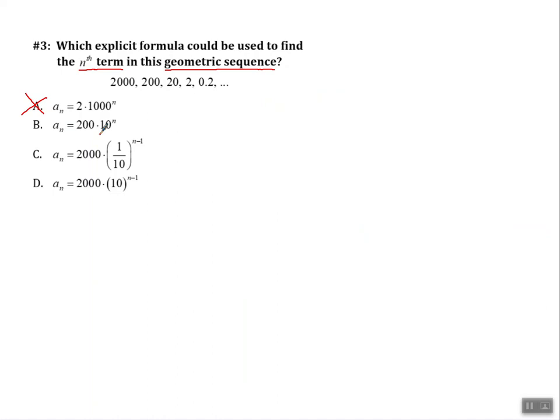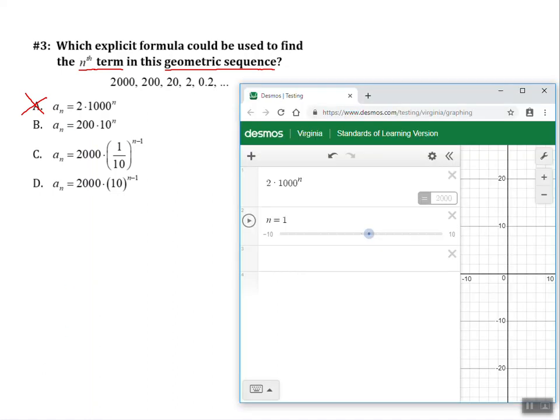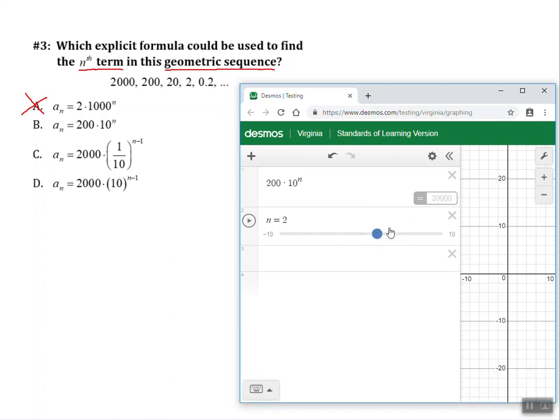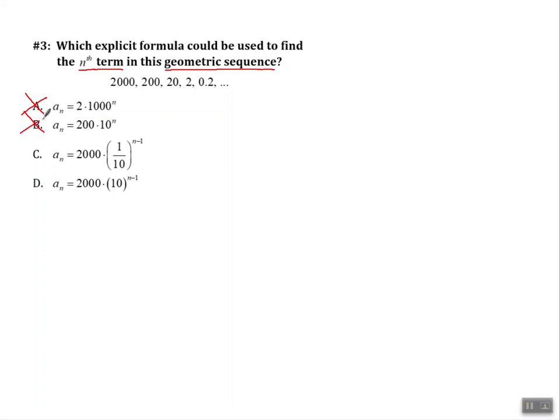Let's try answer choice B. Pull up Desmos, and I'm going to change this 2 to a 200, and it's times 10 to the n power. And let's see what I've got. Oh, I got the first term is correct again, but when I slide over to the second term, no, it's getting bigger again. So that's not going to work. So I'm going to say answer choice B, no good. Cross that one out.